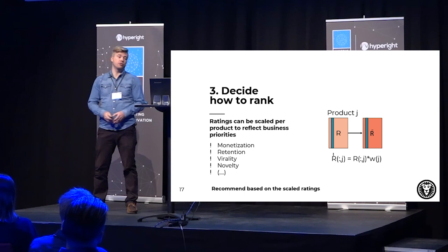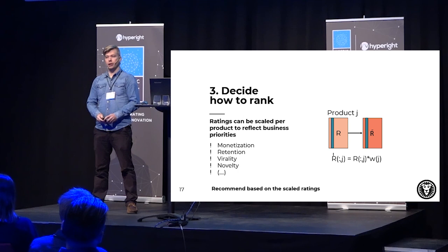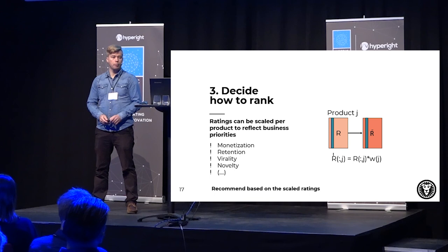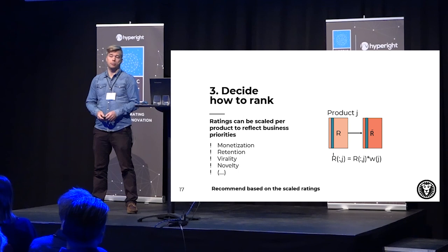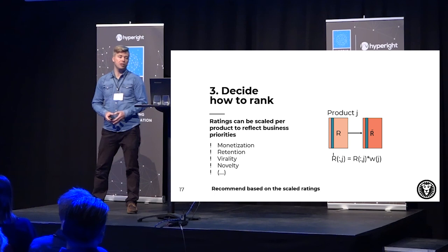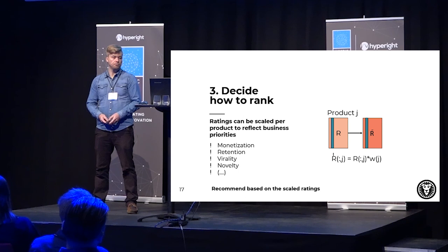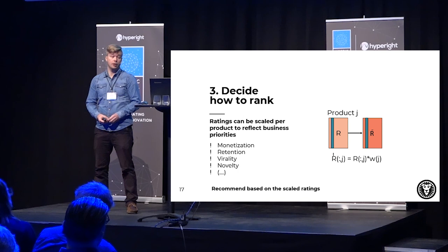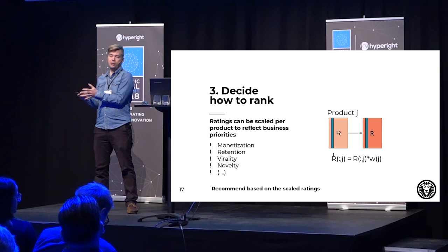Now I want to say that this is the gist of it — you can of course make this a lot more complicated, and supposedly you will not solve this with singular value decomposition. Now we have a matrix full of ratings covering products and customers, but maybe we want to tailor this more towards what we want to do in the company. We can simply scale these ratings. Some dimensions that may be interesting are retention, monetization, virality, and whatever you're aiming for as a company. Instead of giving recommendations based on the R matrix, you do the R-tilde matrix — then you have skewed your results so that it fits your company objectives.